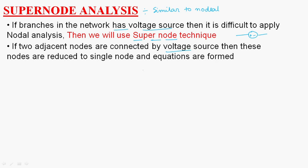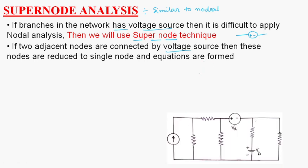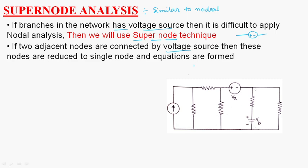See this network — let us consider node V1, node V2, and node V3. The resistors are R1, R2, R3, R4, and R5. If you are going to apply nodal analysis at node V1, with current i entering, the equation is: i equals V1 by R1 plus V1 minus V2 by R2.